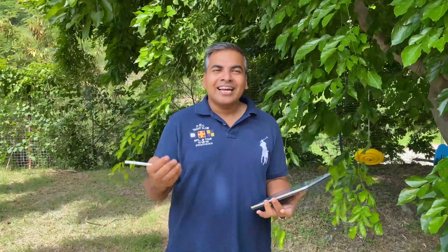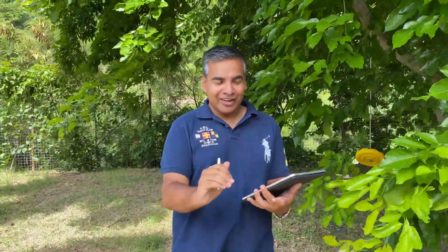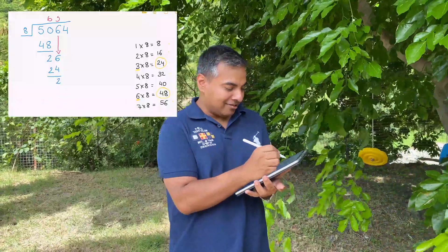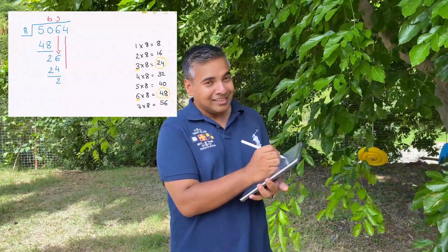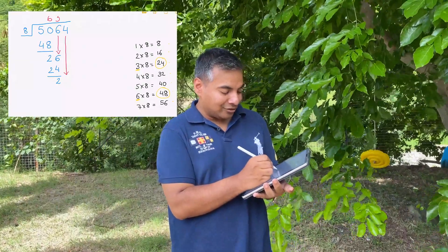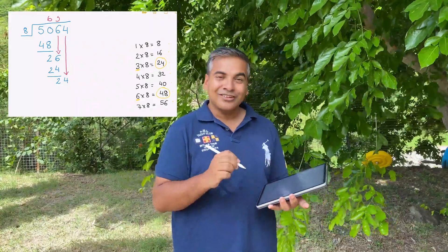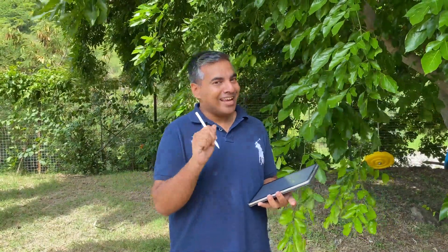Step number seven is a repeat of step four. We bring down the next digit from the big number — which is four, the last digit — right down to the last line next to the two. So we get twenty-four. We're now on to step number eight.